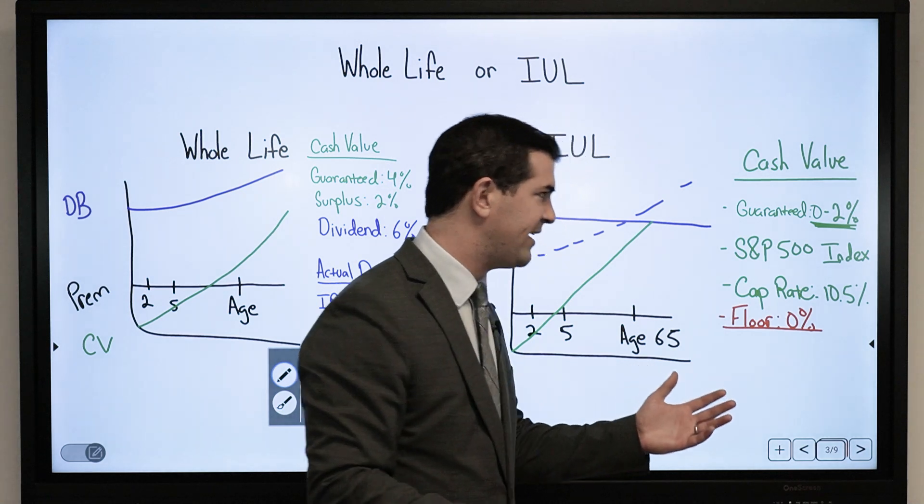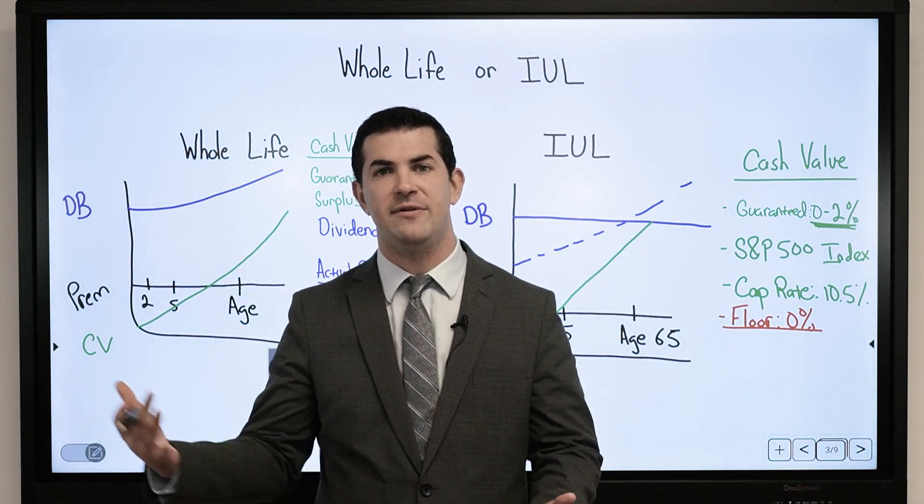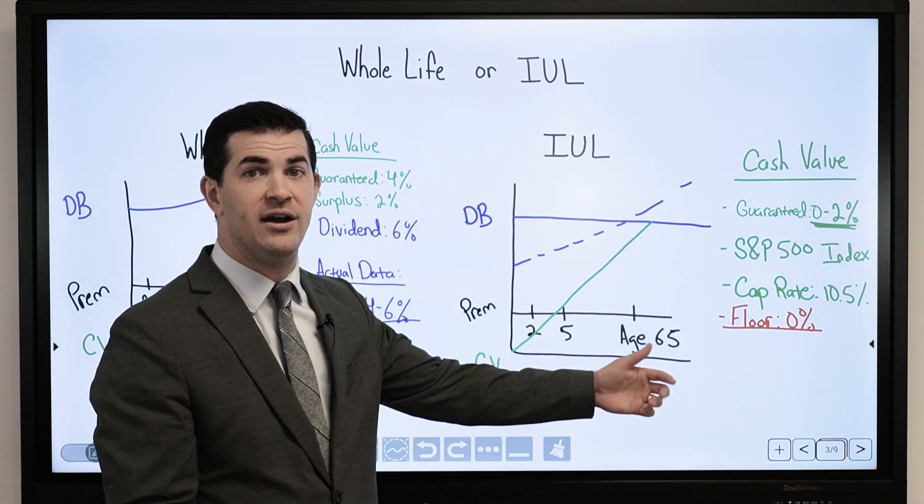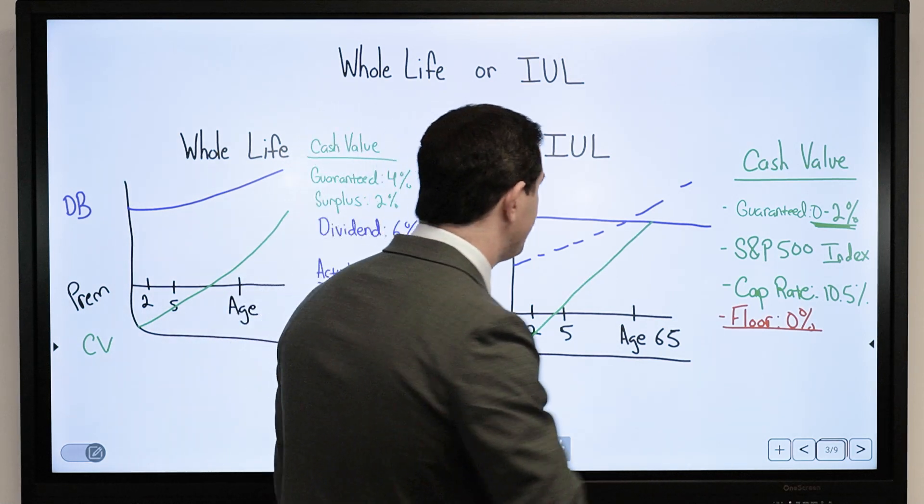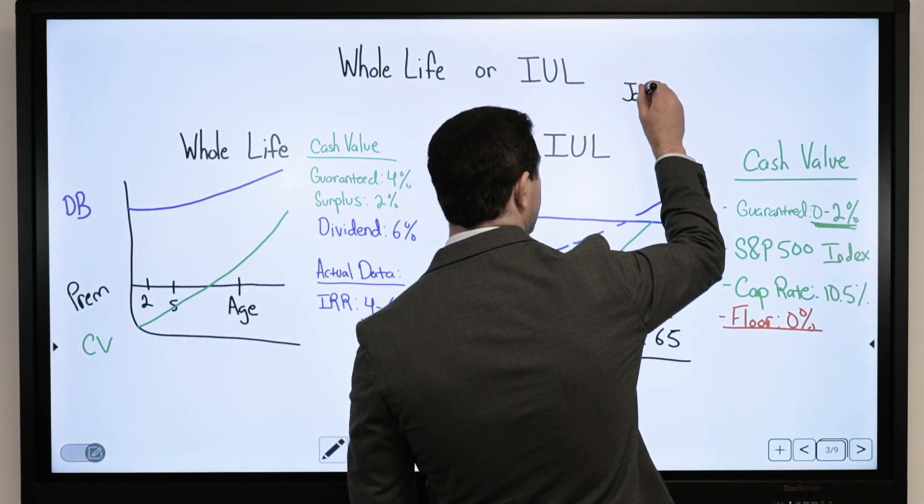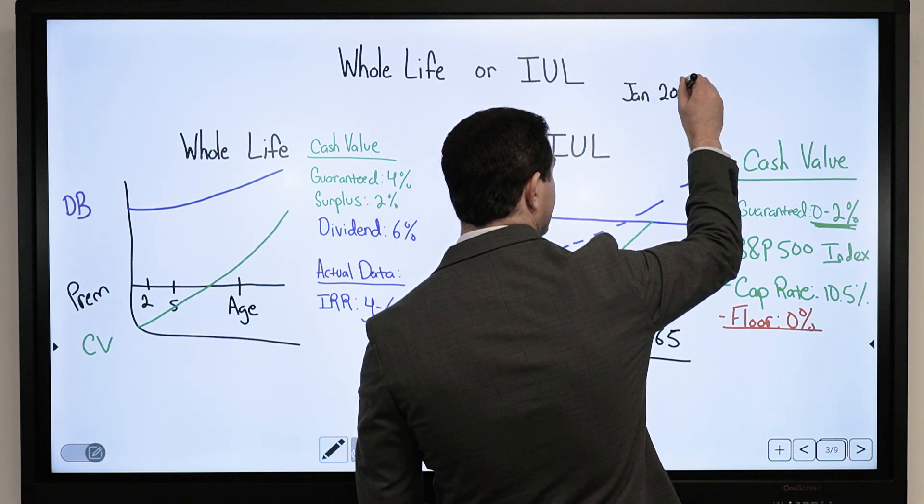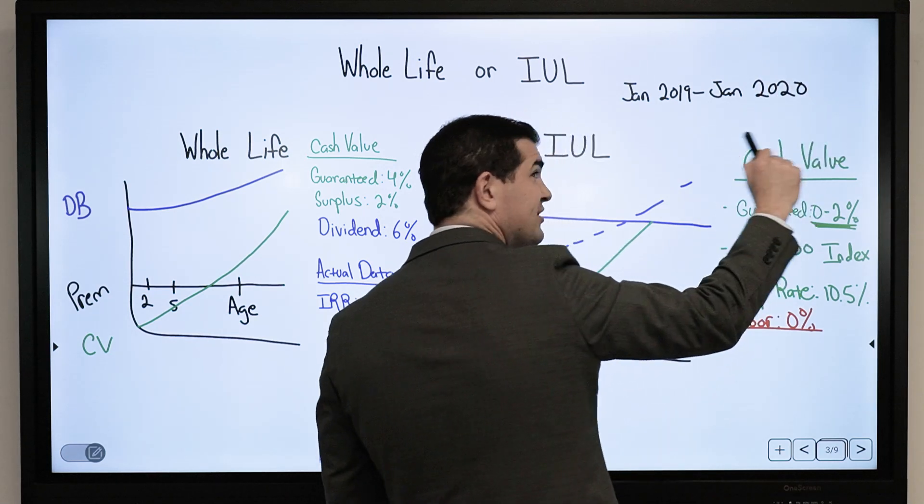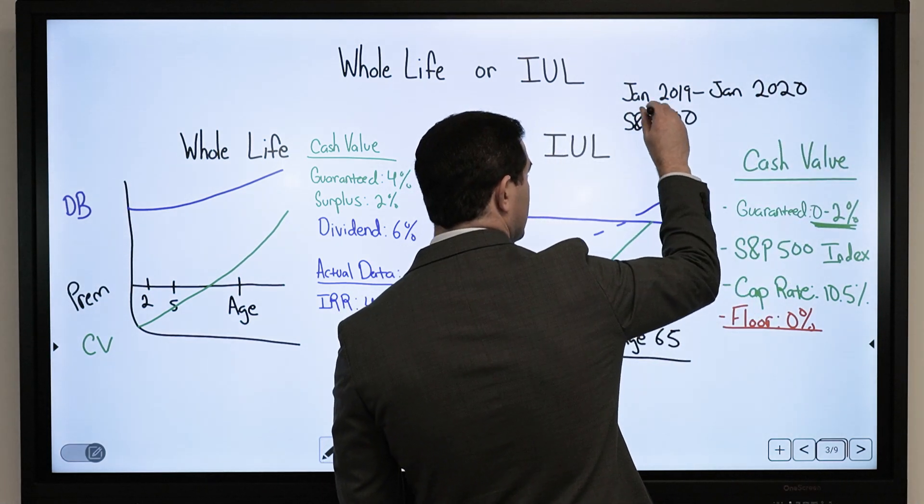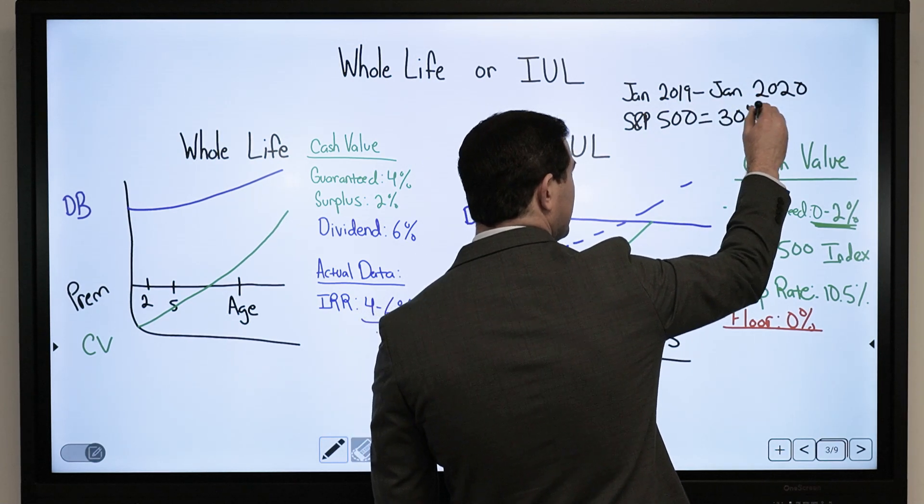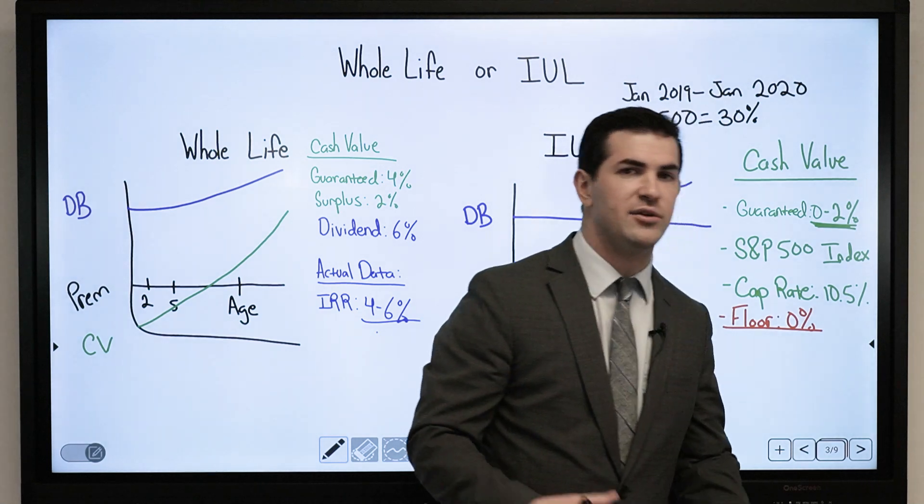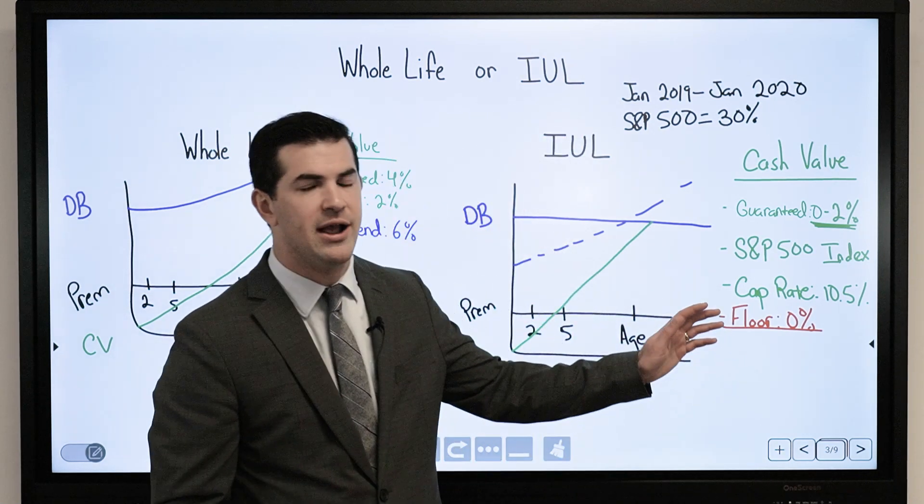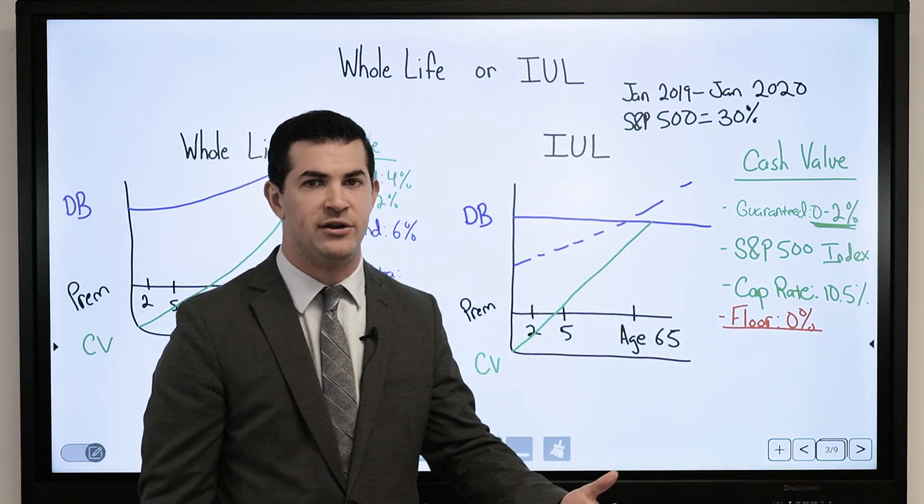So what this means is if I am tied to the S&P 500 index and the S&P 500 goes up, I will participate with those gains up to my cap rate of 10.5%. If we look at a study period, January 2019 through January 2020, the S&P 500 produced just about 30%, a killer year. If I started my policy in January, I would be capped out at a 10.5% earning rate.